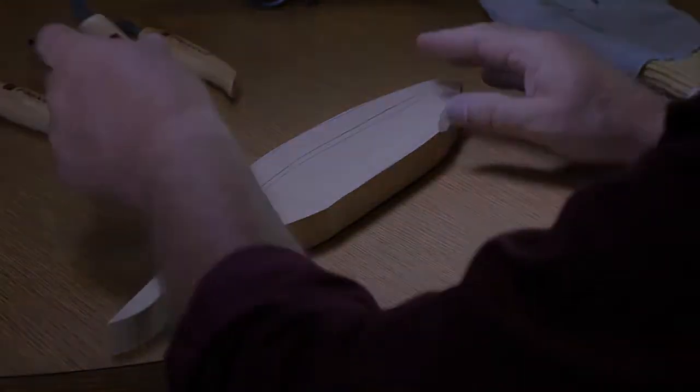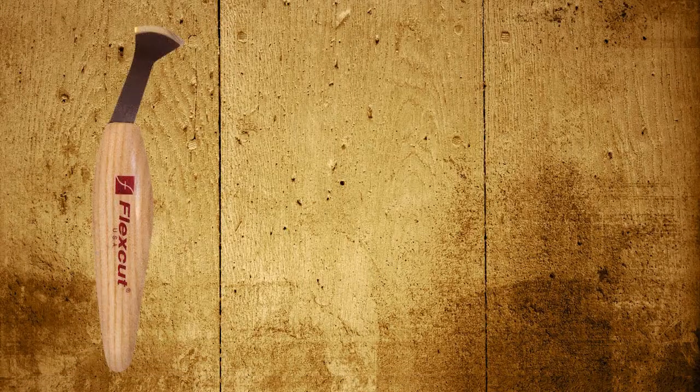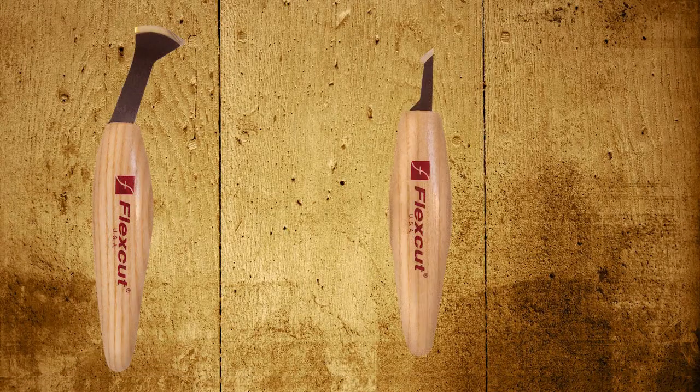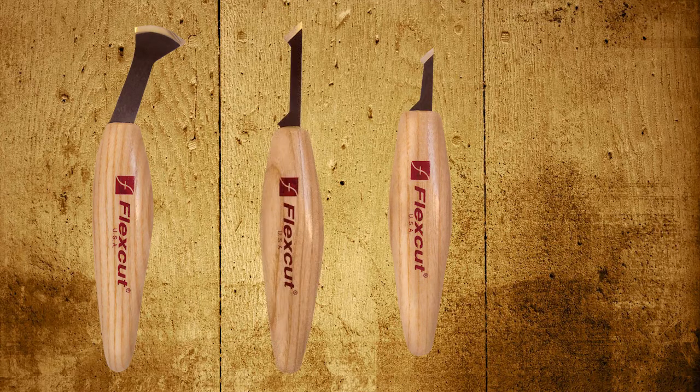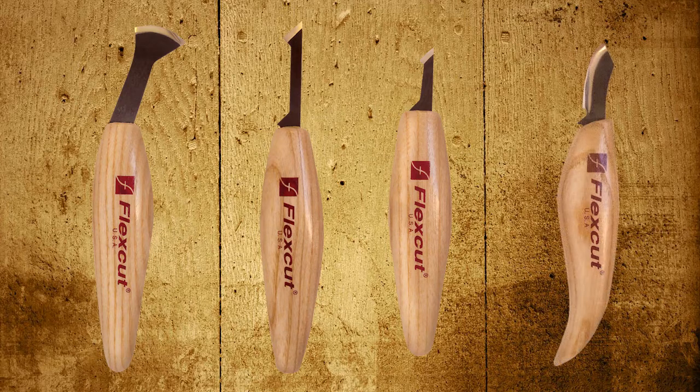Just to go down through them, this is the hook push blade knife. We have then two skews with the mini detailed and the regular detailed, and then the upsweep knife.